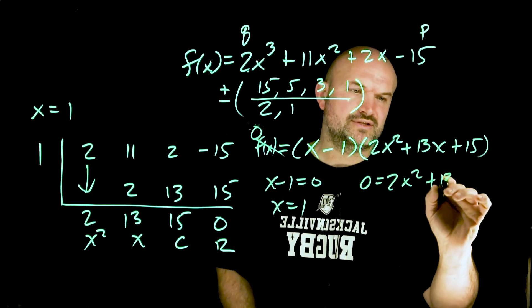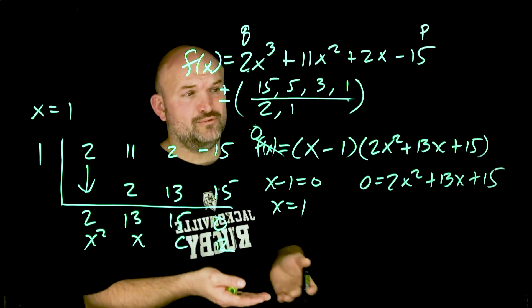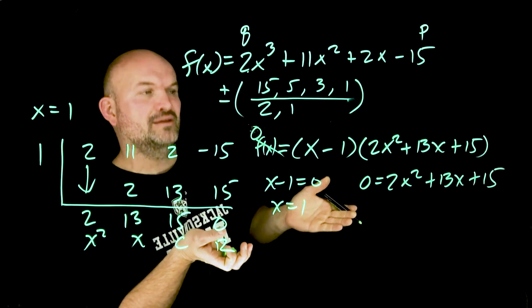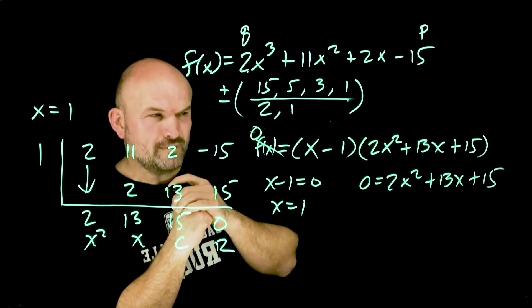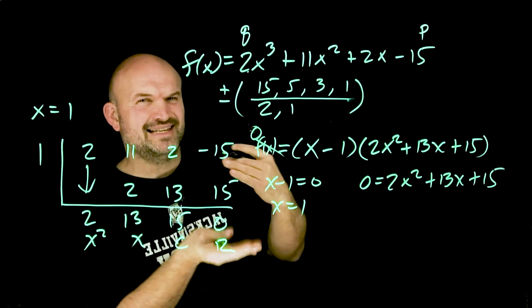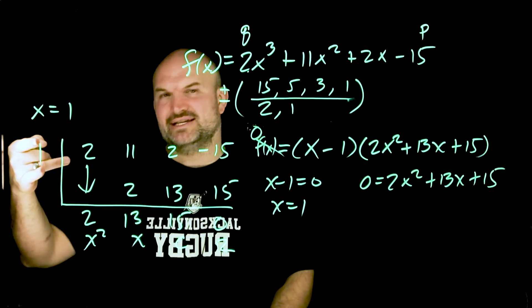Now we need to take this factor and set it equal to zero. 2x squared plus 13x plus 15 equals 0. We need to identify how can we find the remaining zeros. I have it to an x squared. I see that it's a quadratic trinomial. I could go right into the quadratic formula but I always want to test the easiest possible solution first.